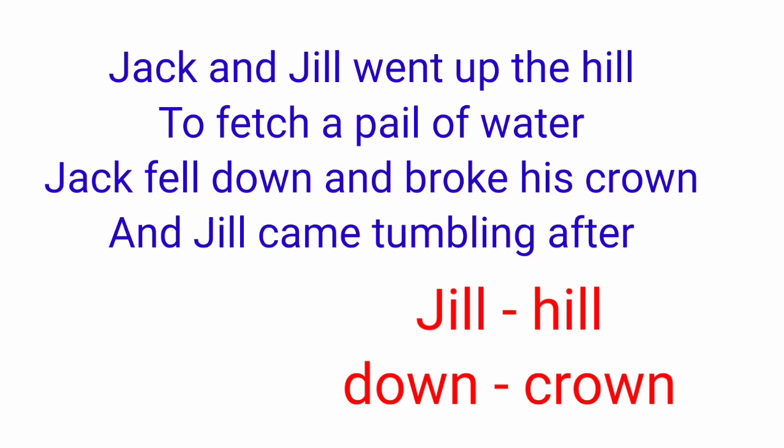Here is another example from a nursery rhyme, Jack and Jill: 'Jack and Jill went up the hill to fetch a pail of water. Jack fell down and broke his crown and Jill came tumbling after.' In the first line, Jill and hill are internal rhymes. Then, 'Jack fell down and broke his crown' — down and crown are internal rhymes.